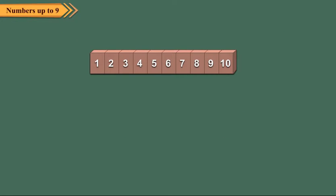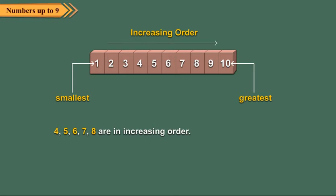When we write the numbers from the smallest to the greatest, we say that the numbers are in increasing or ascending order. Here, numbers from four to eight are written in increasing order.